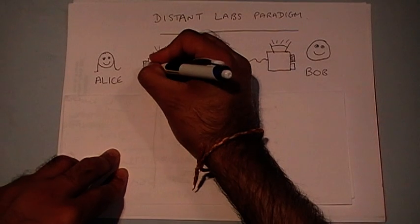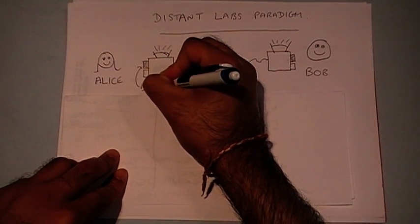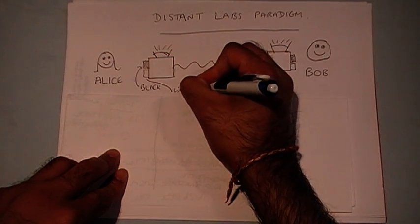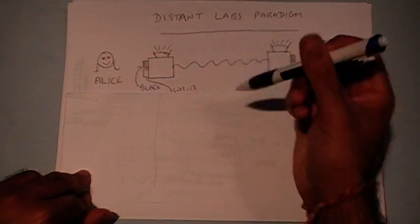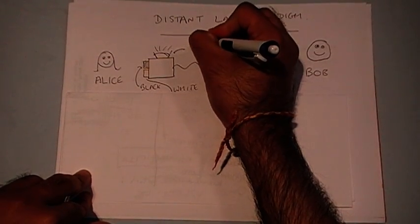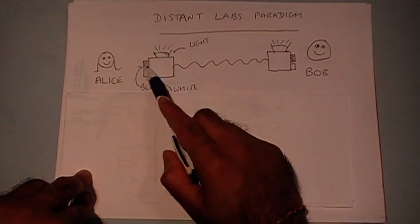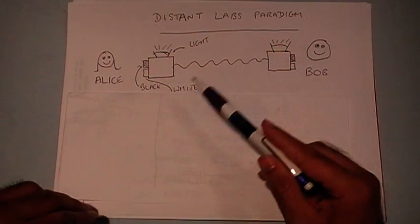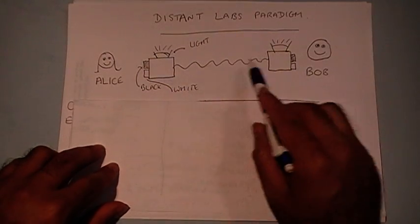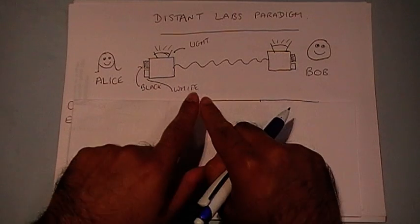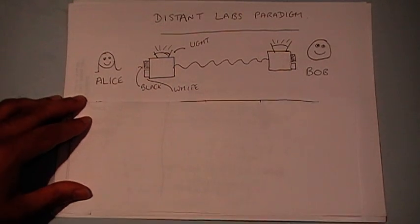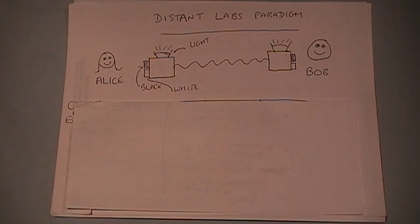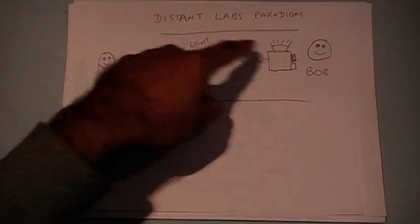On the two boxes there are going to be two buttons — a black button and a white button. There's also going to be a light at the top of each box, and the light will either flash or it won't flash, depending upon the way in which the experimenter presses the buttons. Alice and Bob, as scientists, will want to press the buttons and note whether the boxes flash or not.